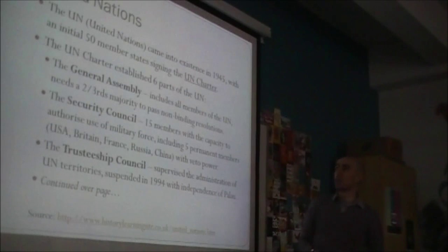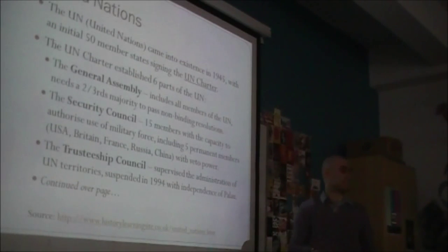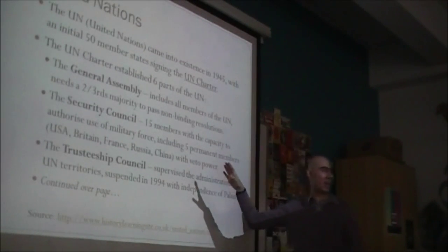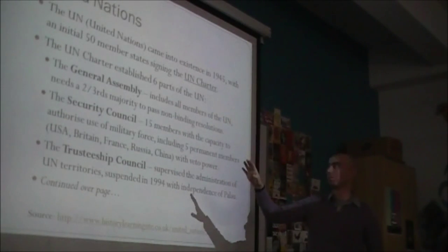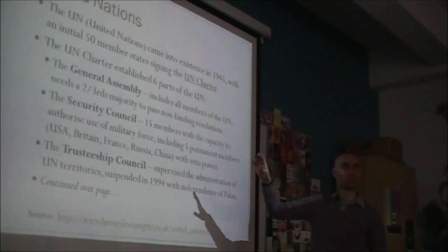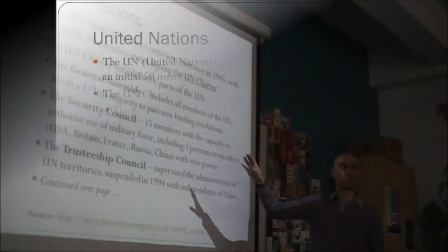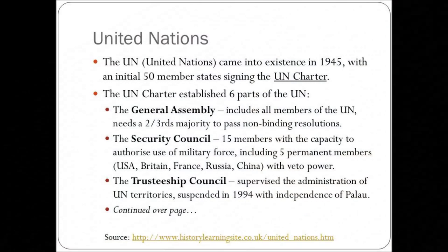There were six parts of the UN, and five of them still exist. The first two you should probably know. One is the General Assembly — it includes all members of the UN, and you need a two-thirds majority to pass non-binding resolutions.